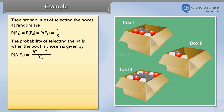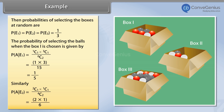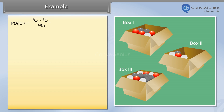P(A|E1) = 1C1 × 3C1 / 6C2 = 1×3/15 = 1/5. Similarly, P(A|E2) = 2C1 × 1C1 / 4C2 = 2×1/6 = 1/3. The probability of selecting the balls when box 3 is chosen: P(A|E3) = 4C1 × 3C1 / 12C2 = 4×3/66 = 2/11.